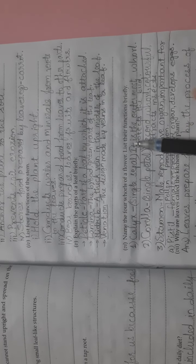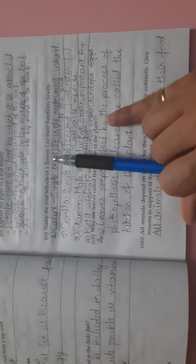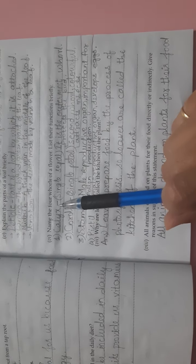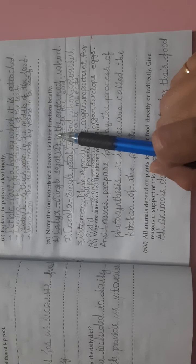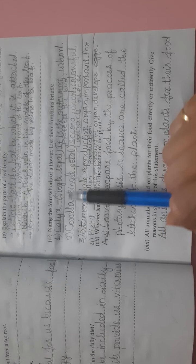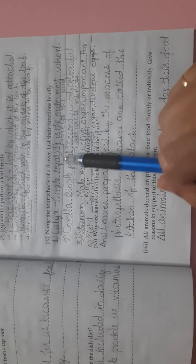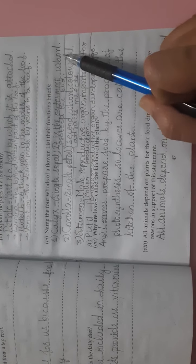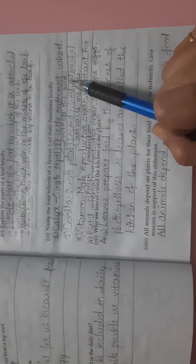Fourth is venation, the design made by veins in a leaf. The sixth one is, name the four whorls of a flower and list their functions briefly. The first is calyx, its singular is sepal. It is the outermost whorl and protects the bud.